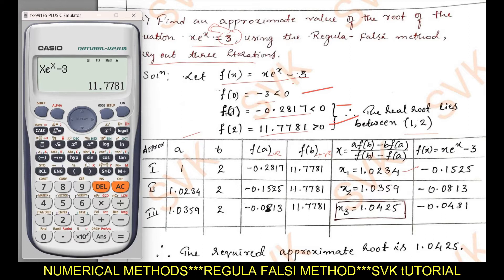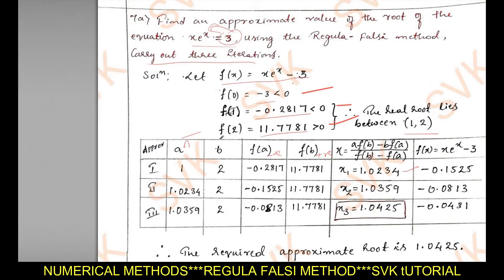After finding these values, solve the table. Assign: small a as capital A, small b as capital B, f(a) as capital C, f(b) as capital D. Then x = [A·D − B·C] / [D − C]. This is the formula to use in the calculator.